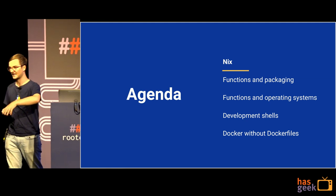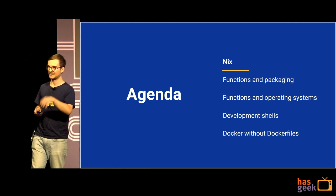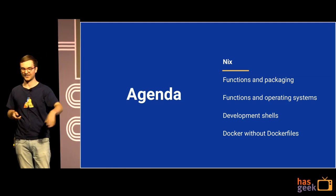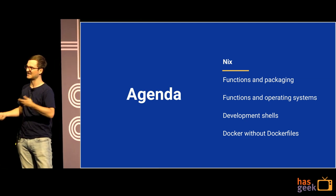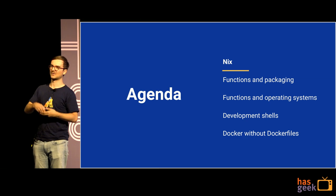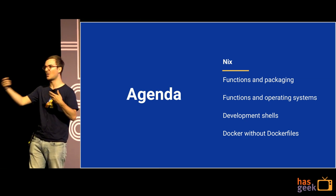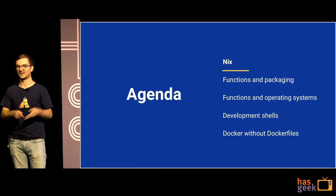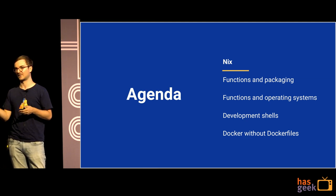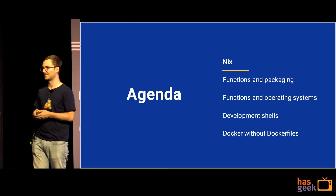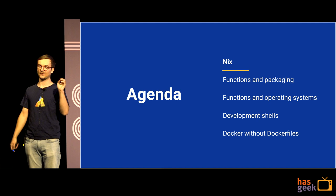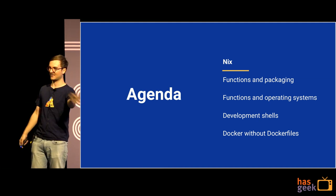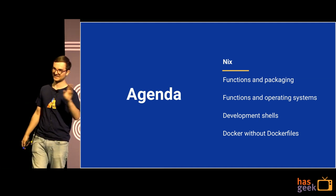Let me talk about the agenda first. We're going to talk about something called Nix — it's a particular tool that we use, but I want you to focus more on the ideas. Then we'll talk about how functional programming relates to packaging and building software, and how it relates to operating systems. Then I'll show you two examples: development shells that we use inside Marketplace, and Docker images, which is how we actually deploy Atlassian Marketplace. We use Nix to build Docker images. So if you're interested in building Docker images without ever looking at a Dockerfile again, stay until the end.